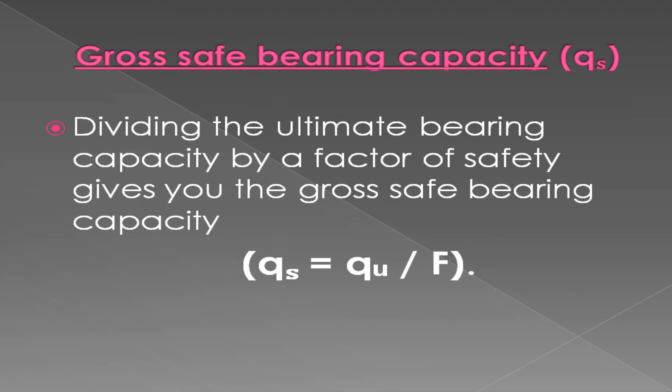Gross safe bearing capacity: Dividing the ultimate bearing capacity by a factor of safety gives you the gross safe bearing capacity. The formula is given below.